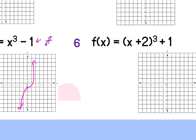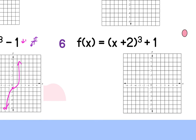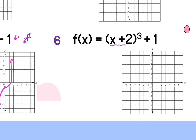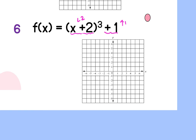Example 6: absolute value of x plus 2, plus 1. The plus 2 inside the absolute value causes a shift left 2. The plus 1 after the absolute value causes a shift up 1. So the coordinate point, normally at zero, zero, moves to negative 2, positive 1. Draw the V-shape through that point.